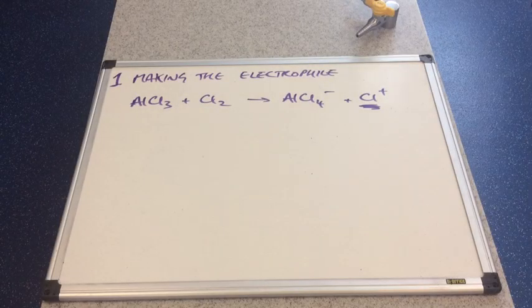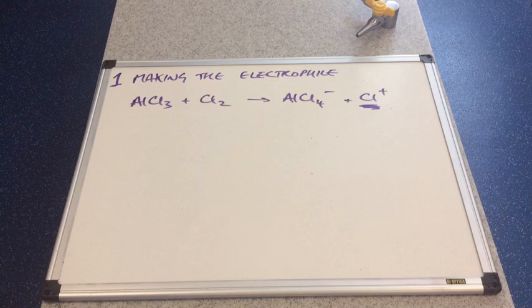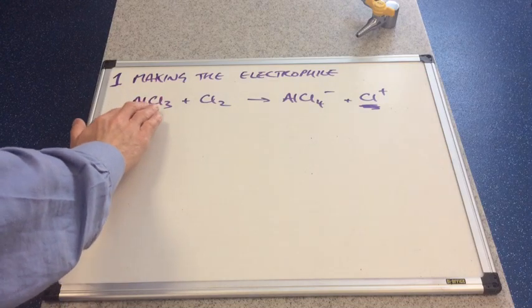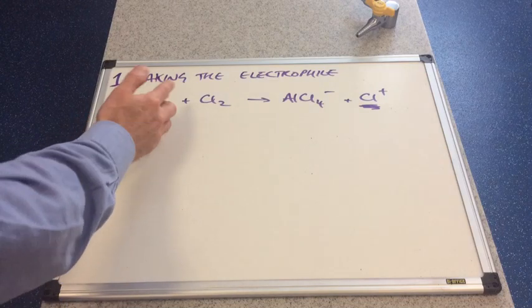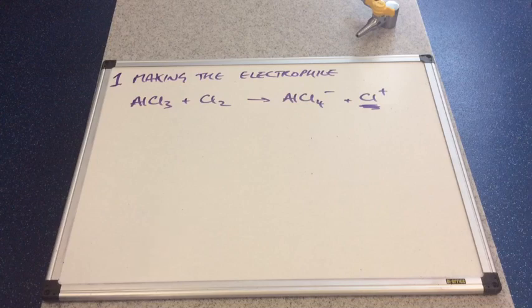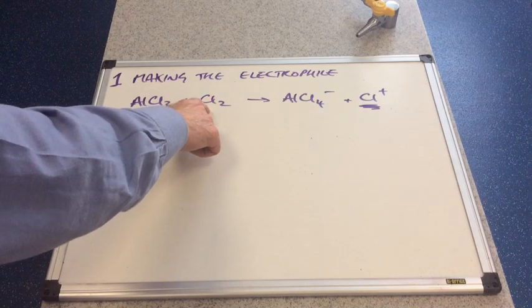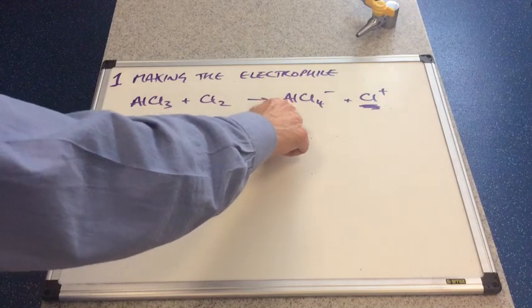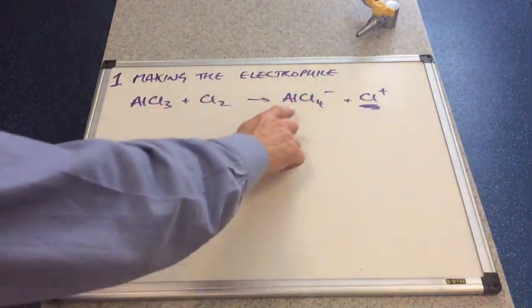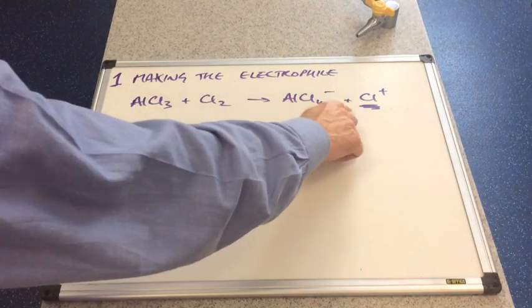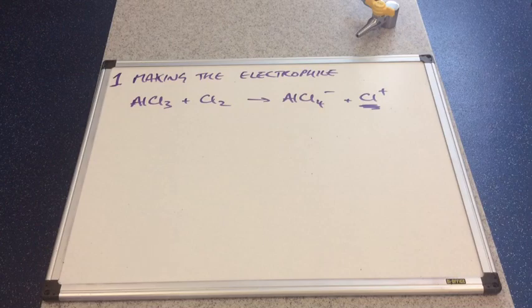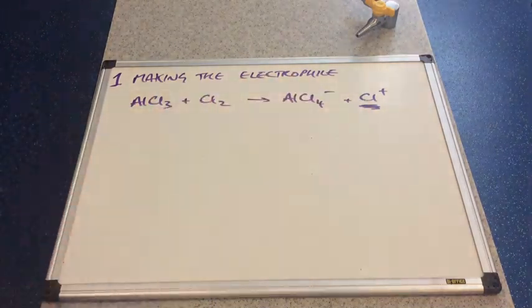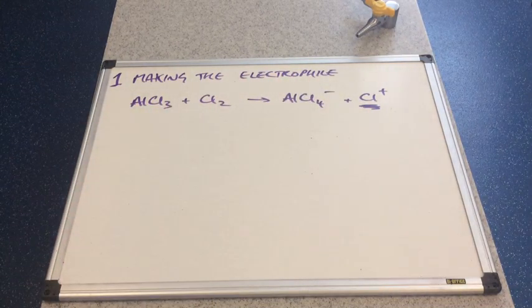With nitration, we need to make the electrophile first. Here's the equation for that. We've got the catalyst, AlCl3, similarly for FeCl3. We react that with the chlorine and we get these two ions produced: AlCl4- and the Cl+ ion. I've obviously underlined this one because that is going to be the electrophile.